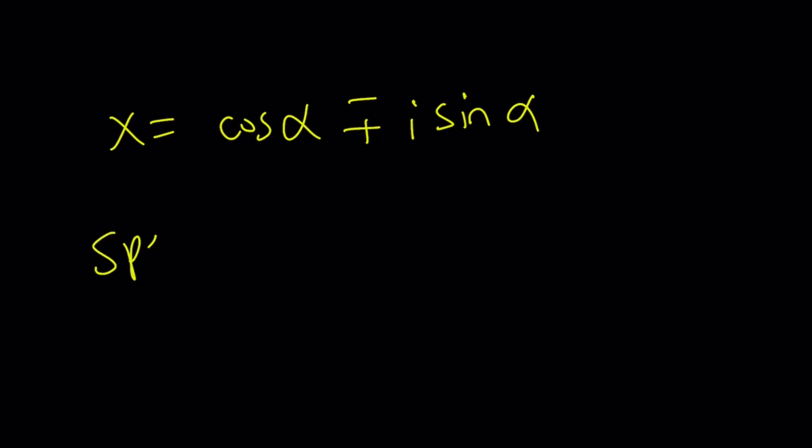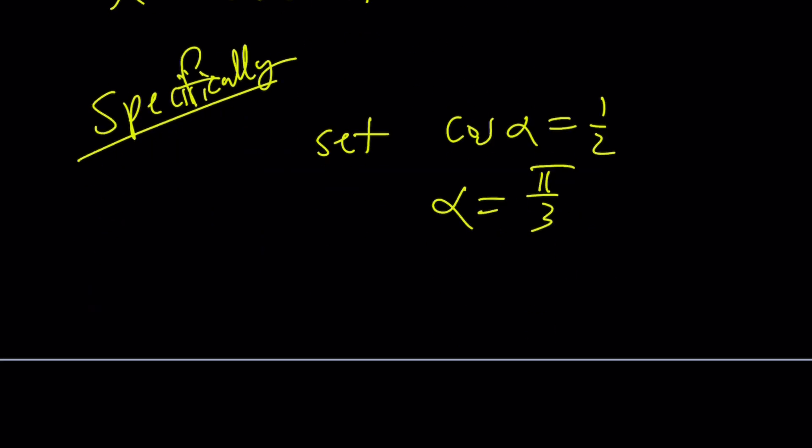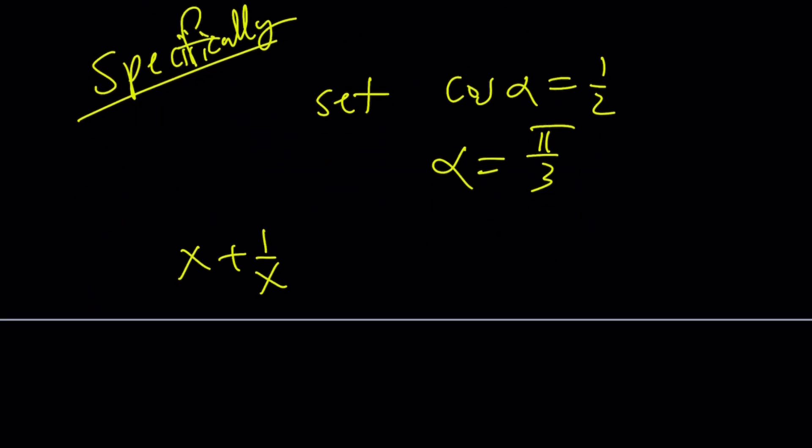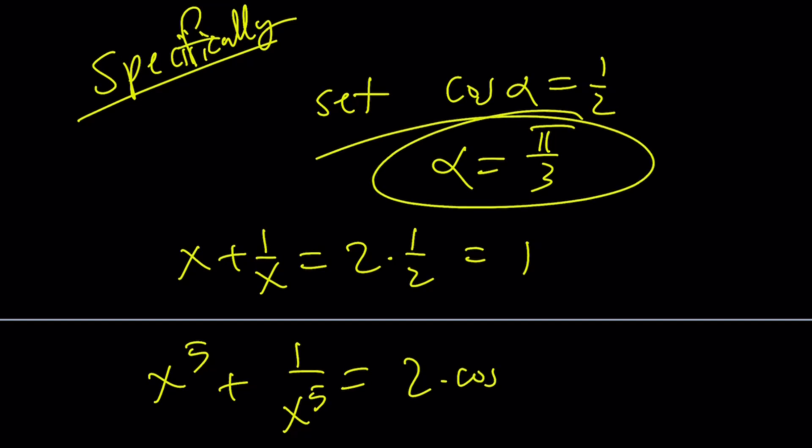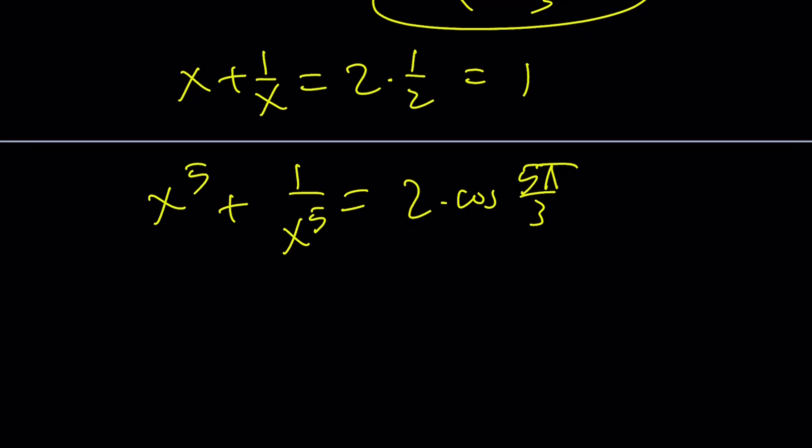Specifically, remember I told you that I was going to show you specifically. What happens, right? So, set cosine alpha equals 1 half or alpha equals pi over 3, like 60 degrees. Then, you're going to get x plus 1 over x equals 2 times 1 half, which is 1. And x to the fifth plus 1 over x to the fifth is going to be 2 times cosine 5 alpha, which is 5 pi over 3. And, guess what? 5 pi over 3 and pi over 3 have the same cosine. And, that's going to be 1 again.